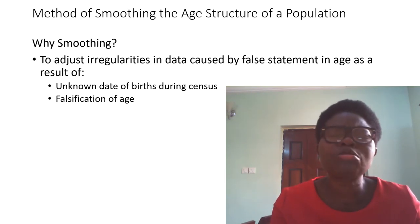So when this happens and you have your census figures, you discover that there are some persons that have given their age and do not really fall into that age group. How do you now work around this? It's for you to smooth out the age structure that has been given in the census population.